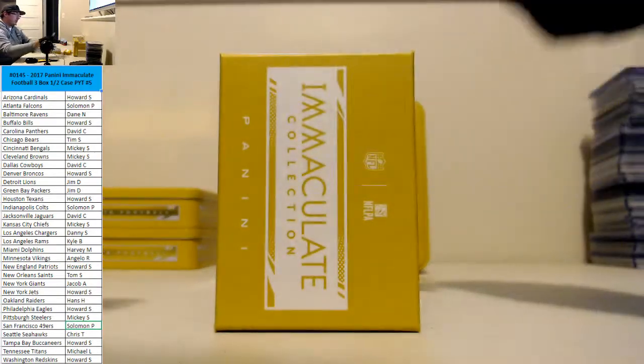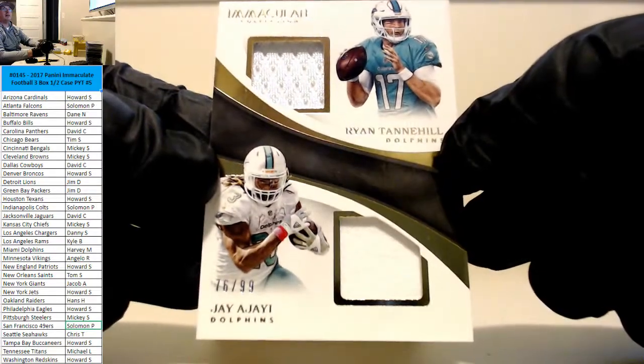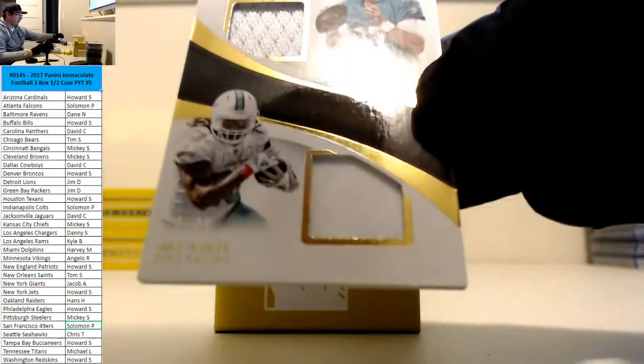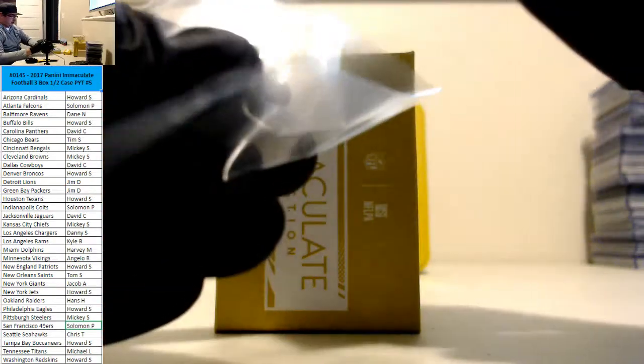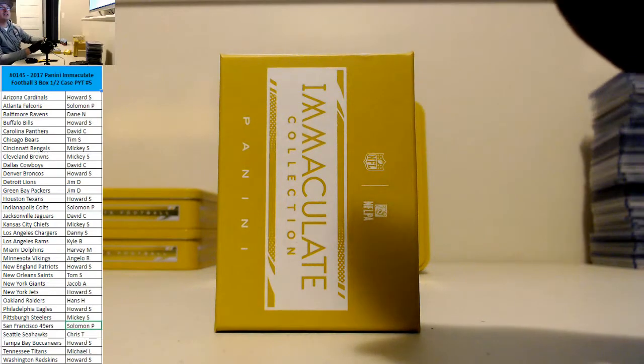For the Dolphins. Jay Ajayi and Ryan Tannehill. 76 and a 99. We had a beautiful one coming up. This is probably the case hit. Who's got them? Jacob.